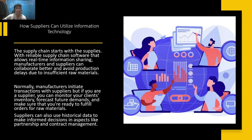How can suppliers utilize information technology? The supply chain starts with suppliers. With reliable supply chain software that allows real-time information sharing, manufacturers and suppliers can collaborate better and avoid production delays due to insufficient raw materials. Normally, manufacturers initiate transportation with suppliers. But if you are a supplier, you can monitor your client's inventory, forecast your demands, and make sure you are ready to fulfill orders for raw materials.